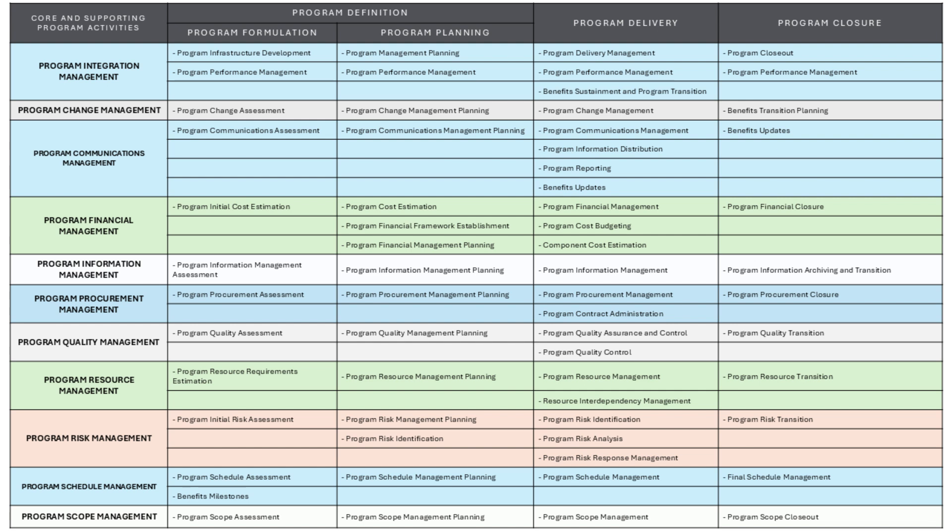Program quality management ensures that the program's outputs meet the required quality standards. Program quality assessment evaluates the program's quality needs and sets the baseline for quality standards. Program quality management planning creates a quality management plan that details how quality will be measured and controlled throughout the program. Program quality assurance and control ensures that the program meets quality standards during the delivery phase through continuous monitoring and adjustments. Program quality transition ensures that quality is maintained as the program transitions into operations or post-delivery activities.